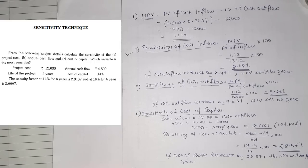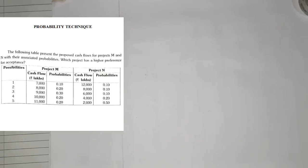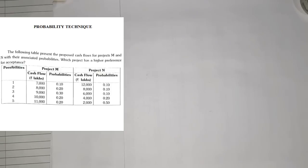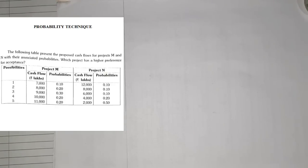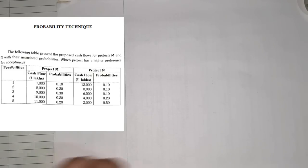This is how you solve a sum based on sensitivity technique: first find NPV, then sensitivity of inflow, outflow, and cost of capital. The least percentage will be the most sensitive factor. Now we jump to the fifth type, which is based on probability technique.